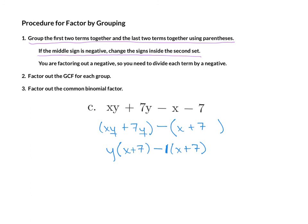Now we are at our factor by grouping step. We want to factor out the common binomial factor. Treating y times x plus 7 as one term and minus 1 times x plus 7 as the second term, we can factor out the x plus 7. Inside my parentheses, in the first term if we get rid of x plus 7 we are left with y, and in the second term if we get rid of x plus 7 — whether you choose to write the 1 there or not — we need two terms inside our second set. So we get y minus 1. That is one of the reasons I encourage you to write the 1 there, so that when you factor out, you are left with something easily recognizable.